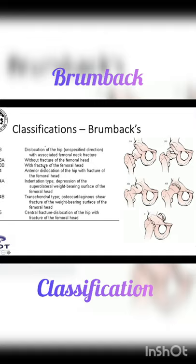Type 4 is anterior dislocation of the hip with fracture of the femoral head. In 4A, we have the indentation type, which is the depression of the superolateral weight-bearing surface of the femoral head. Type 4B is the transchondral type, an osteocartilaginous shear fracture of the weight-bearing surface of the femoral head. Type 5 is the central fracture-dislocation of the hip with fracture of the femoral head.